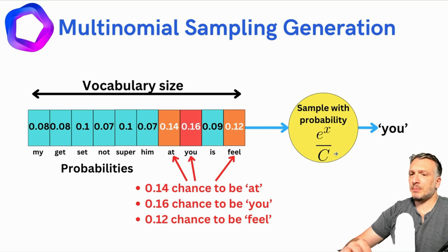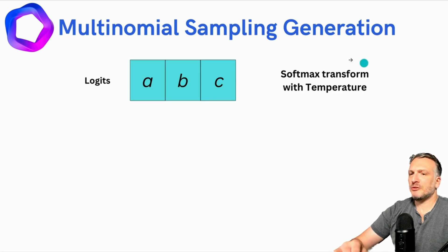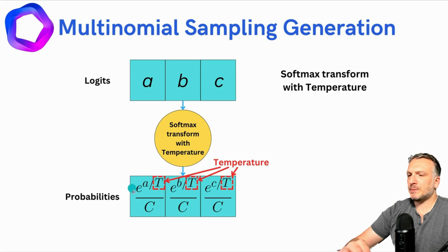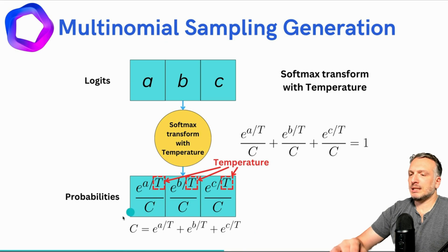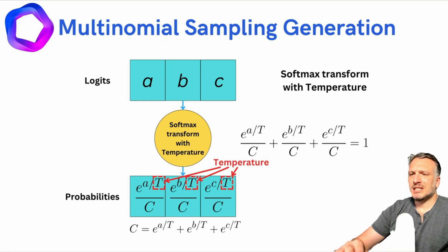The problem with that process is that the sampling is very dependent on the analytical form of the softmax transformation. We could imagine having another transformation that leads to probability as well. To solve for that, we can include a new parameter in the softmax transform that we're going to call the temperature. So instead of applying the exponential without any other parameter, we're going to divide each of the logits by the temperature parameter. This will allow to regulate how the sampling is performed. Again, we compute the constant C as the sum of the different exponentials, and we include in the exponentials the parameter temperature, and all the elements in the vector sum to 1.